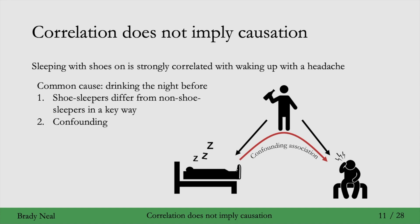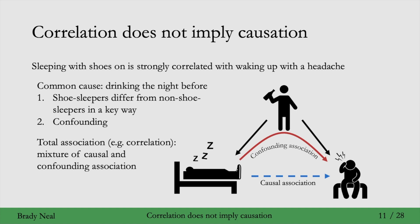Graphically, you should visualize it this way. There's this confounding association that is running between shoe sleeping and waking up with a headache, and that's the association that we observe. This is in contrast to causal association, which would be a directed path from shoe sleeping to headache. The total association that we observe is a mixture of these causal and confounding associations.